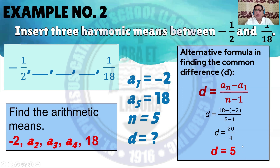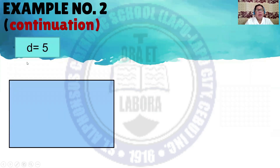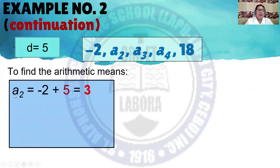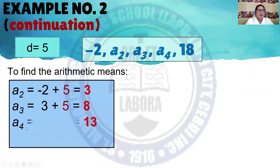You can also use the original formula for the common difference. The value of the common difference is 5. Now we find the arithmetic means: A sub 2 equals negative 2 plus 5, which equals 3. For the third term: 3 plus 5 equals 8. And A sub 4 equals 8 plus 5, which equals 13.